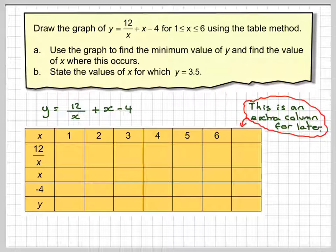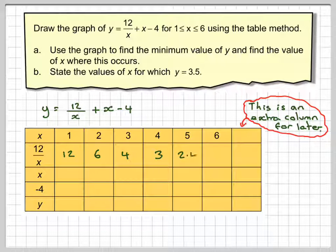Working each of these out: 12 divided by 1 gives me 12, 12 divided by 2 gives me 6, 12 divided by 3 gives me 4, 12 divided by 4 gives me 3, 12 divided by 5 gives me 2.4, 12 divided by 6 gives me 2. These are all the same value as what x is, so 1, 2, 3, 4, 5, 6, and these are always going to be minus 4.